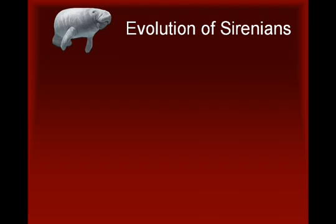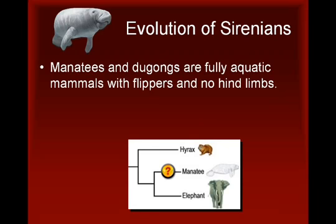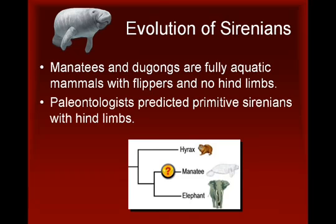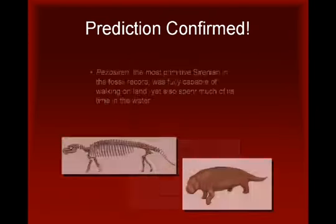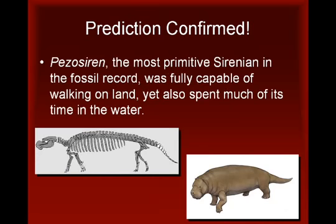Our final example involves the evolution of sirenians, the group of mammals that includes manatees and dugongs. Sirenians are fully aquatic mammals with flippers and no hind limbs. Morphological and molecular evidence indicates that, among existing species, the sirenians are most closely related to elephants. Based on this evidence, paleontologists predicted the existence of primitive sirenians with hind limbs.